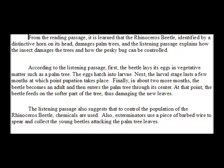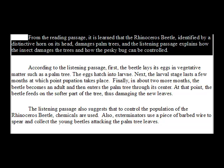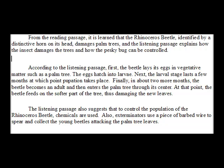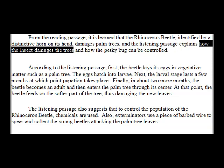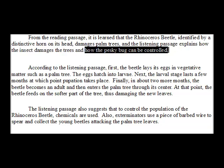Let's look at the first sentence. It says: 'From the reading passage, it is learned that the rhinoceros beetle, identified by a distinctive horn on its head, damages palm trees, and the listening passage explains how the insect damages the trees and how the pesky bug can be controlled.' In this case, you have a connector in the middle that joins a compound sentence, but on each side of it you have multiple clauses — for example, 'it is learned that' introduces a noun clause, and 'how the insect damages the trees' and 'how the pesky bug can be controlled' are two more noun clauses. So you have what's called a compound complex sentence.